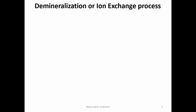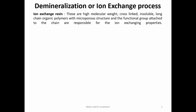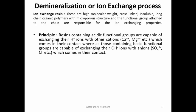Next is demineralization or ion exchange process. Ion exchange resins are high molecular weight, cross-linked, insoluble, long-chain organic polymers with microporous structure; the functional groups attached to the chain are responsible for ion exchange properties. There are two types: acidic resins (with loosely held H⁺ ions) and basic resins (with loosely held OH⁻ ions). H⁺ ions from acidic resins are exchanged for Ca²⁺ or Mg²⁺ from hard water, while OH⁻ ions from basic resins are exchanged for SO₄²⁻, Cl⁻, NO₃⁻, etc.